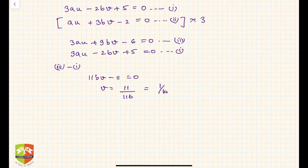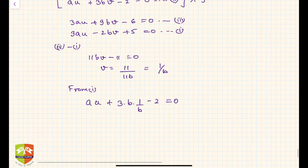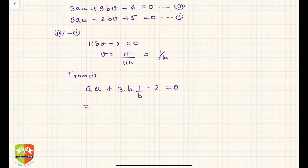Substitute this value of v in equation 1. From 1 we know au plus 3 times b times v, and v is 1 upon b, minus 2 equals 0. This will give you au plus 3 minus 2 equals 0. This implies au is equal to minus 1, so u will be equal to minus 1 upon a.